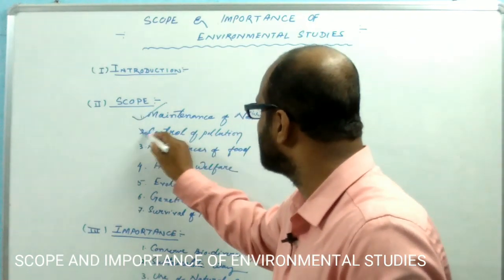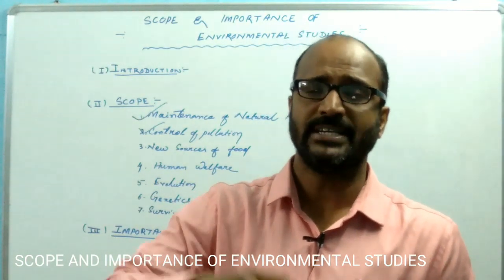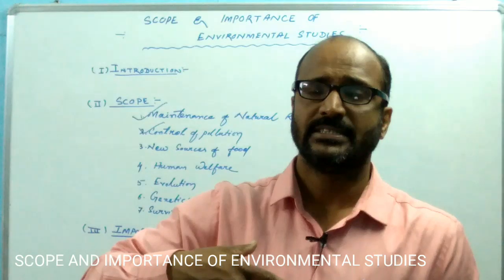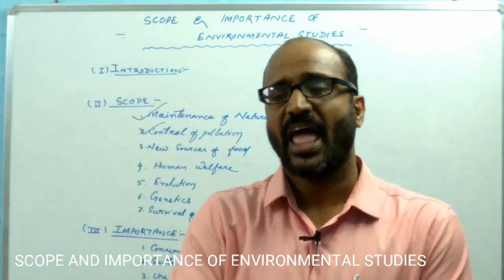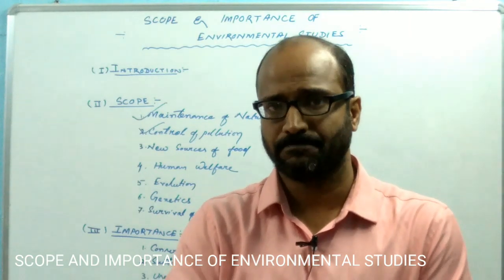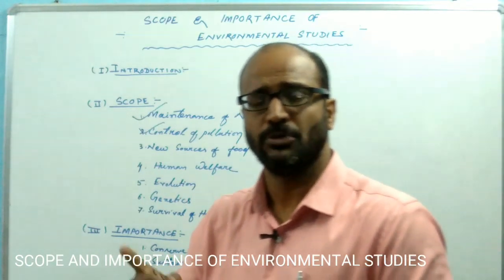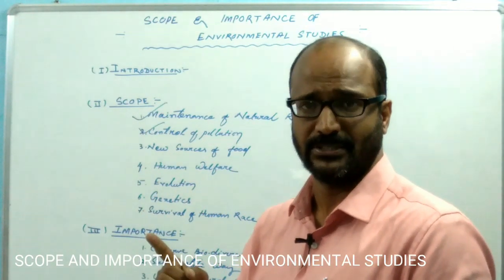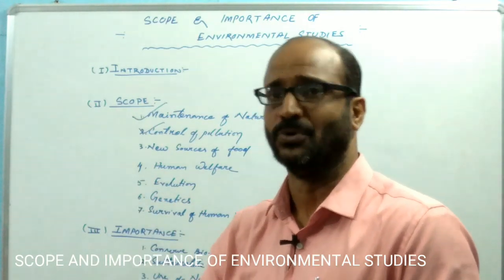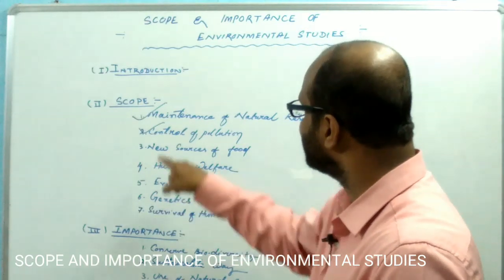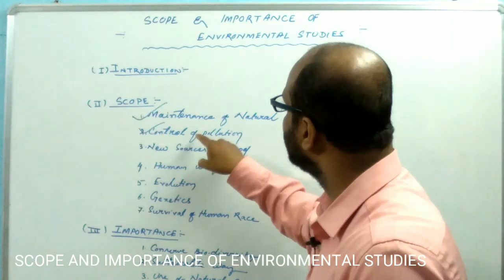This is the first scope of environmental studies. If you study environmental science, then you can control environmental pollution. The environment is being polluted day by day because of the activity of every organism, so every individual is responsible for environmental pollution. If you gain the knowledge of how the environment gets polluted, then you can control that pollution. This is the second scope.